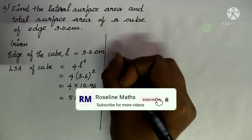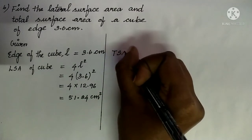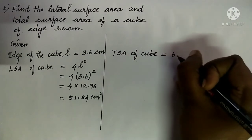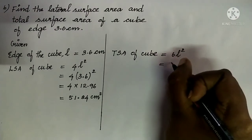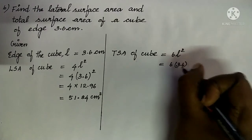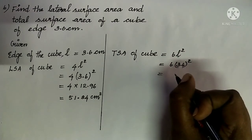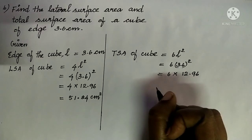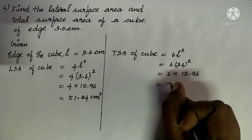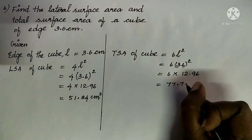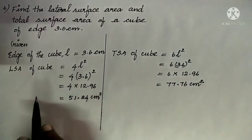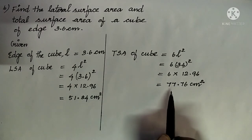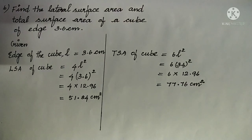Next we are going to find the total surface area of the cube, that is TSA of cube. The TSA of a cube is 6L². So 6 into L², where L is 3.6. 3.6² is 12.96, so 6 into 12.96 is 77.76. We write our unit in centimeter square. So the LSA of the cube is 51.84 cm² and the TSA of the cube is 77.76 cm².